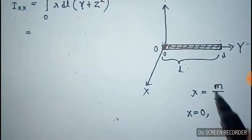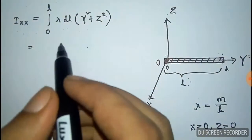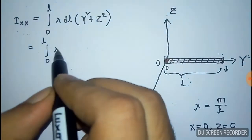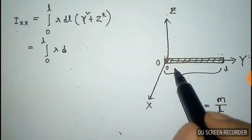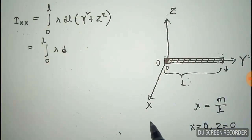And x and z equal to 0 because there is no component of the rod along x and z axis. So this is 0 to L lambda D, as the rod is along the y-axis so we can say DL equal to DY.